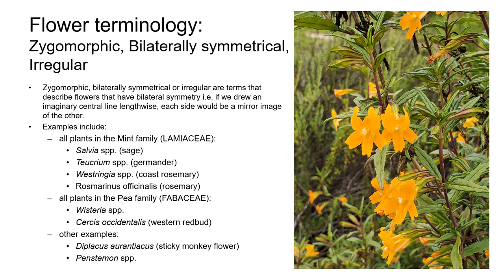Zygomorphic, bilaterally symmetrical, and irregular are terms used to describe flowers that have bilateral symmetry — we can only draw a line in one direction to obtain two equal halves. For example, on the sticky monkey flower on the right, drawing a vertical line gives two mirror halves — that's zygomorphic. Other familiar examples of bilaterally symmetrical plants include all plants in the mint family, all plants in the pea family, and all penstemons.